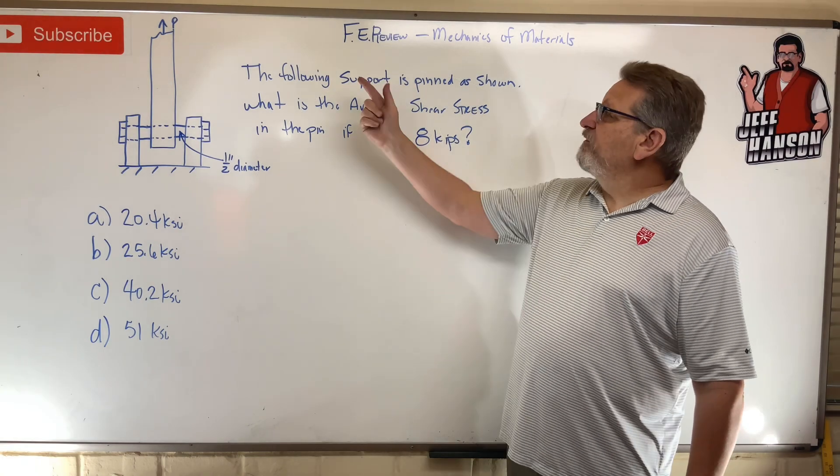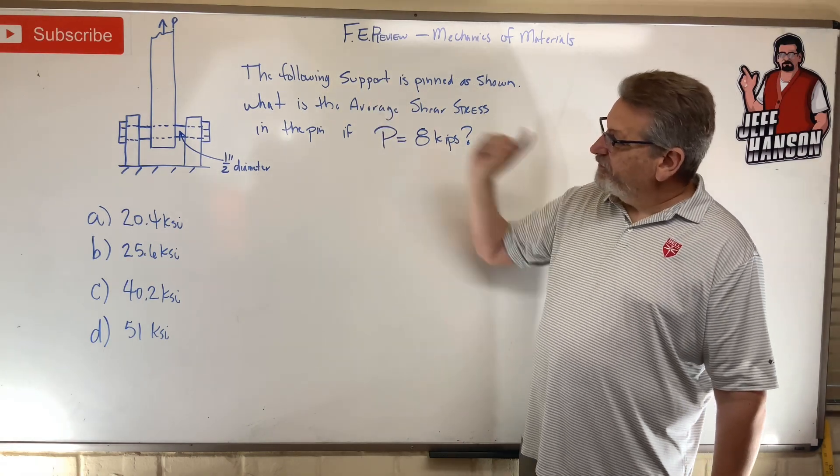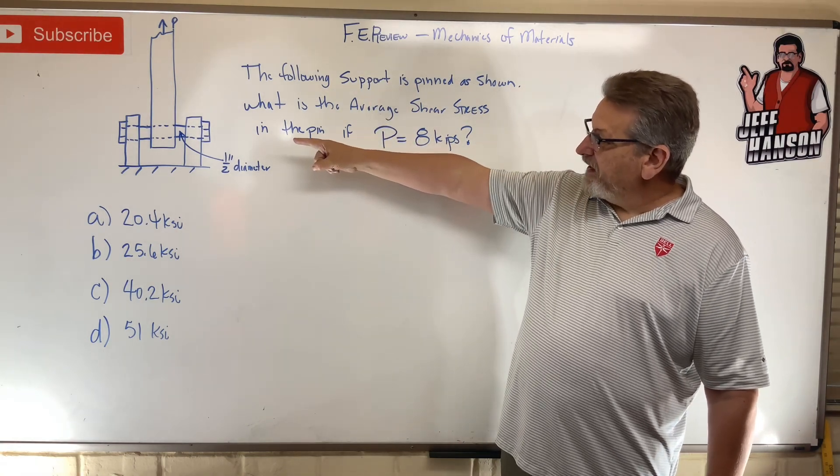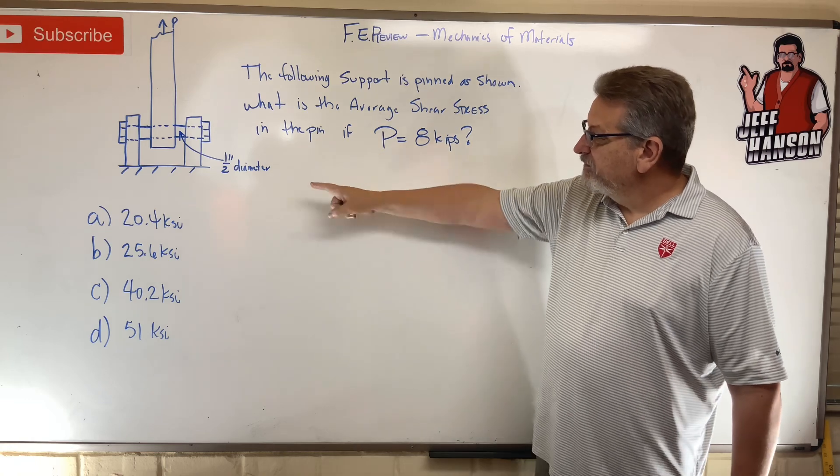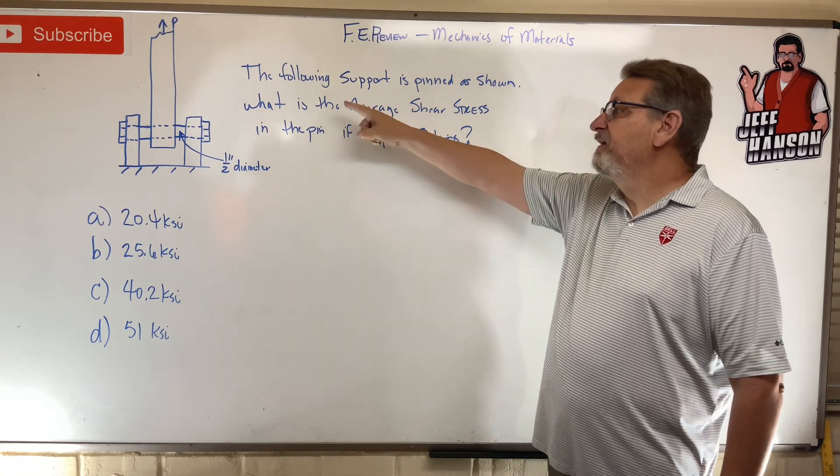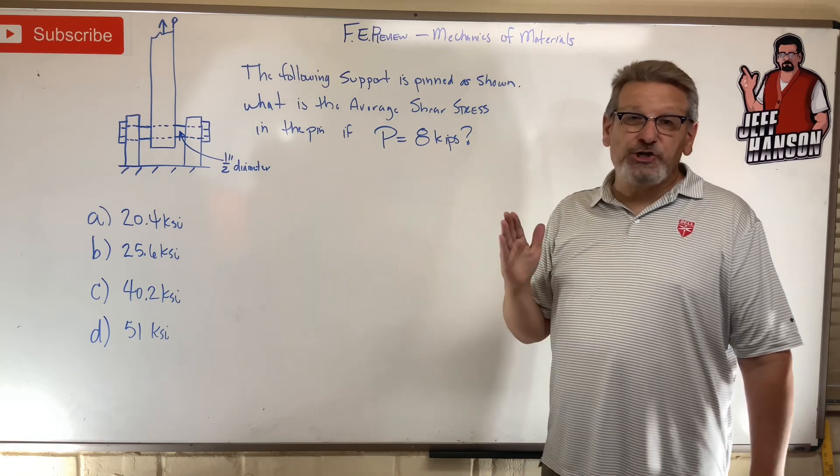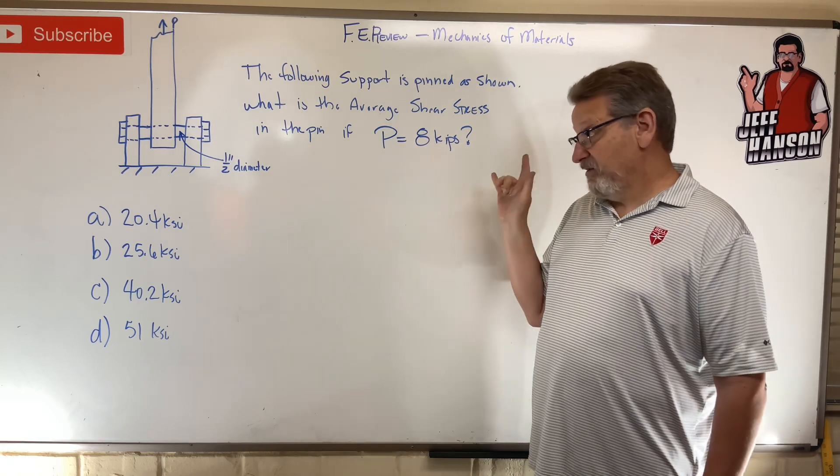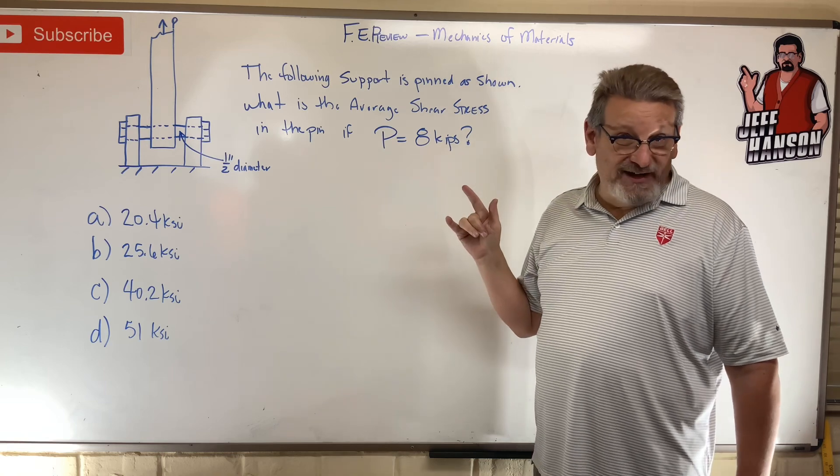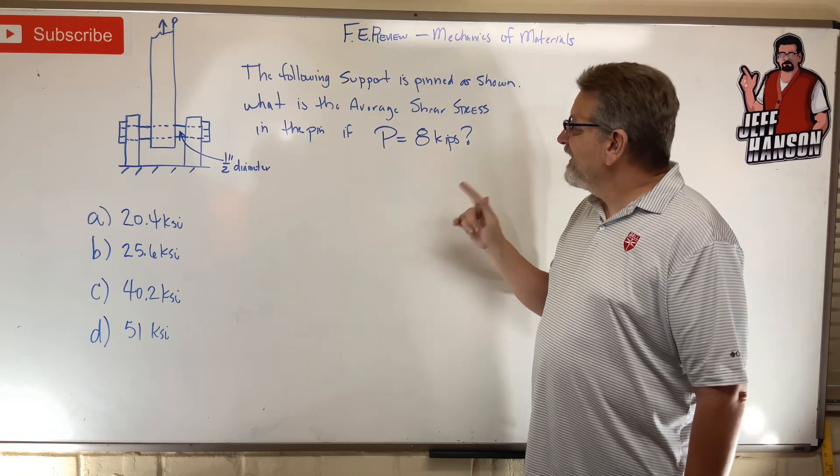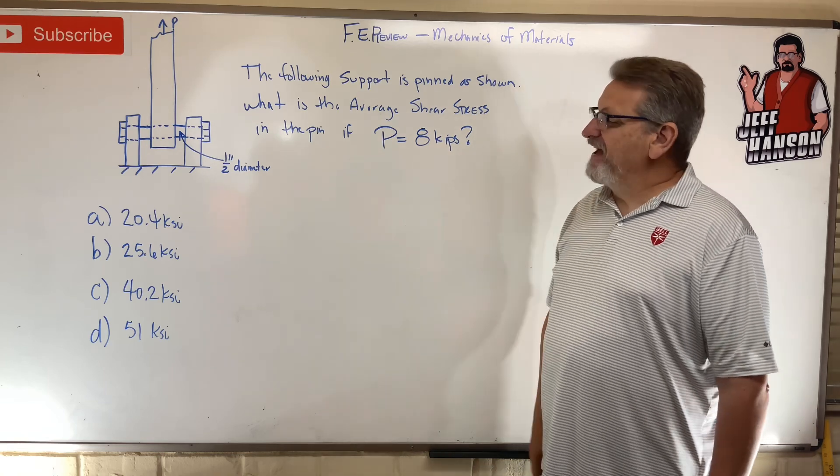Hey friends, welcome back. FE review problem: mechanics of materials. We've got a bracket here that's pinned together with a half-inch diameter pin. The following support is pinned as shown. What is the average shear stress—that's tau, I shouldn't have told you that, now you know how to do it—in the pin if P equals 8 kips?